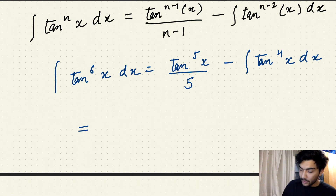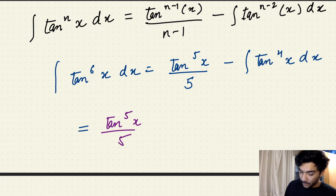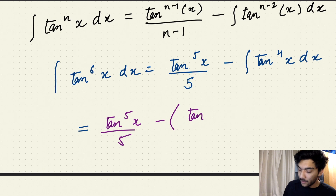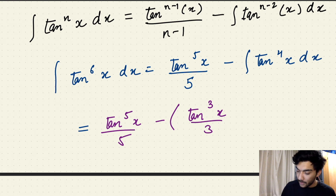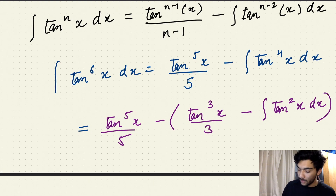Let's use the reduction formula again. We have tan to the power 5 of x upon 5, minus — applying the formula with n equals 4 — tan to the power n minus 1, which is tan to the power 3 of x upon 3, because n minus 1 is 3. Then subtracting the integral of tan squared of x dx.